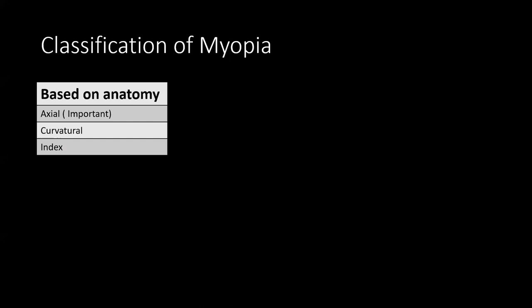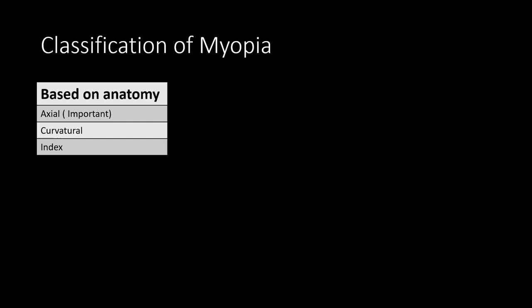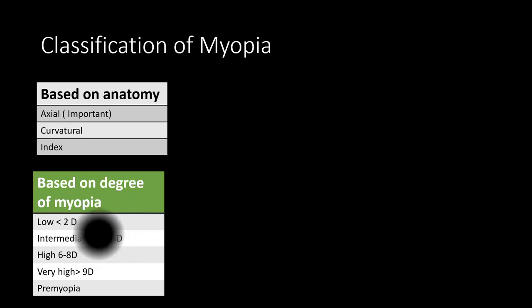Let me run through the classification of refractive errors. For myopia: based on anatomy — axial, curvature, index. Axial is the most common cause of progressive myopia and can be controlled with atropine 0.01% eye drops. Based on degree: low is less than 2 diopters, intermediate 2–6, high 6–8, very high more than 9. Pre-myopia is less than 1 diopter with a sibling wearing myopic glasses.